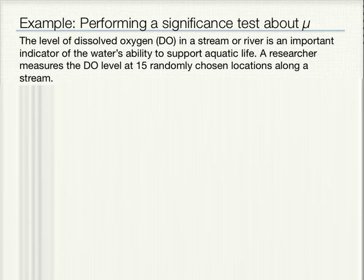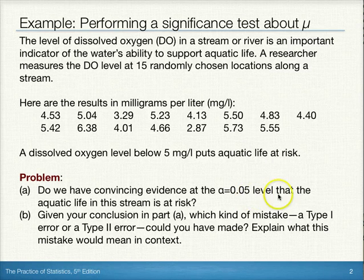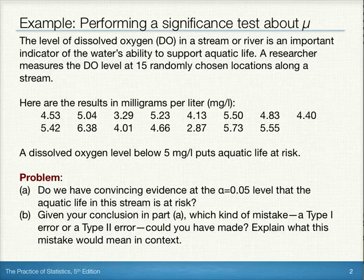For this problem, we need to figure out whether or not we have convincing evidence at the alpha equals 0.05 level that the aquatic life in this stream is at risk, and then given that conclusion, determine which kind of mistake — a type 1 or a type 2 error — could we have made, and explain what this mistake would have meant in context.